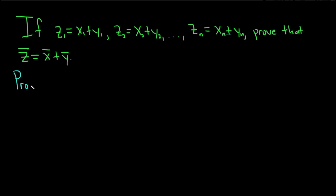Proof. So first, let's just recall what this notation means. First note that Z-bar is the arithmetic mean of the Zs, or simply the average, but it's better to say mean or arithmetic mean since there are many averages.